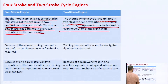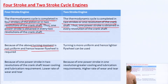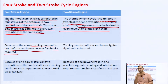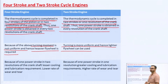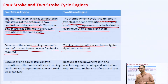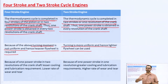Regarding turning moment: in the case of the four-stroke engine, the turning moment is not uniform and hence a heavier flywheel is required, because the power output is obtained every two revolutions of the crankshaft. In the case of the two-stroke engine, the turning moment is more uniform and hence a lighter flywheel can be used, since one power stroke is obtained every revolution — making the turning moment more uniform compared to the four-stroke engine.